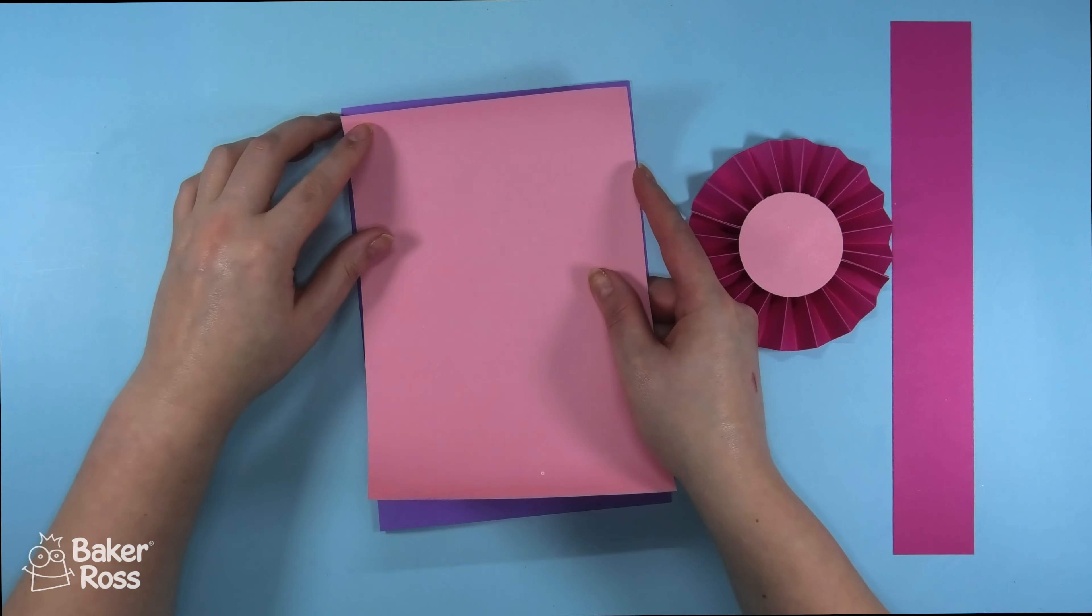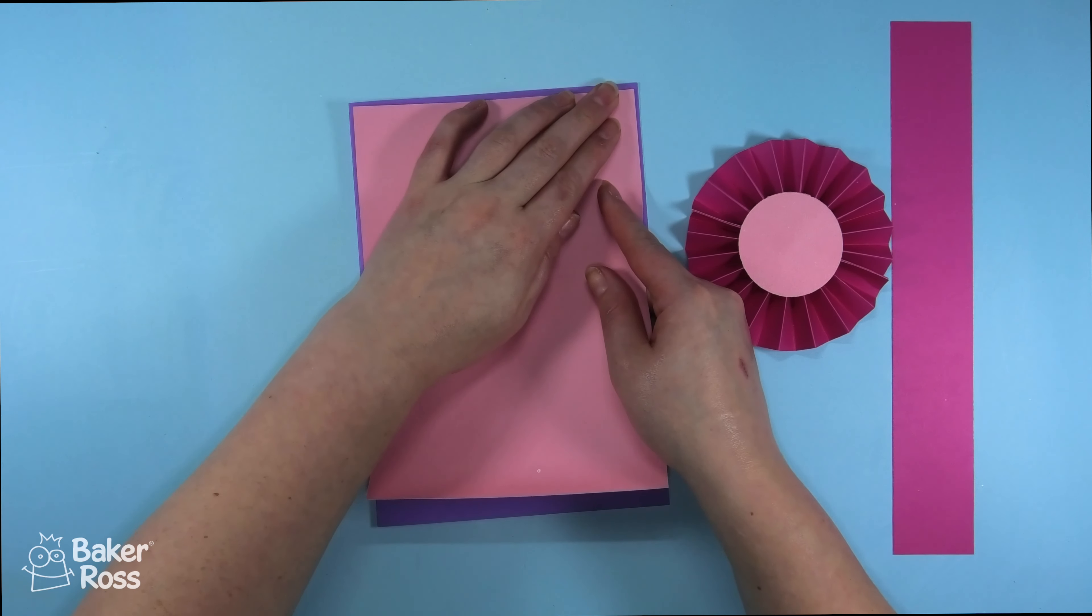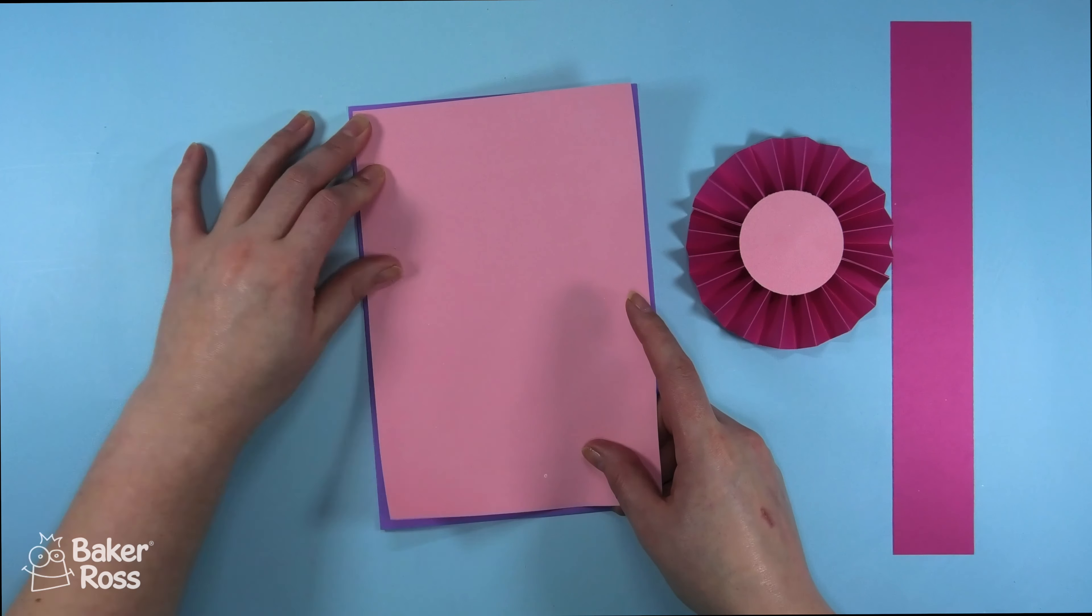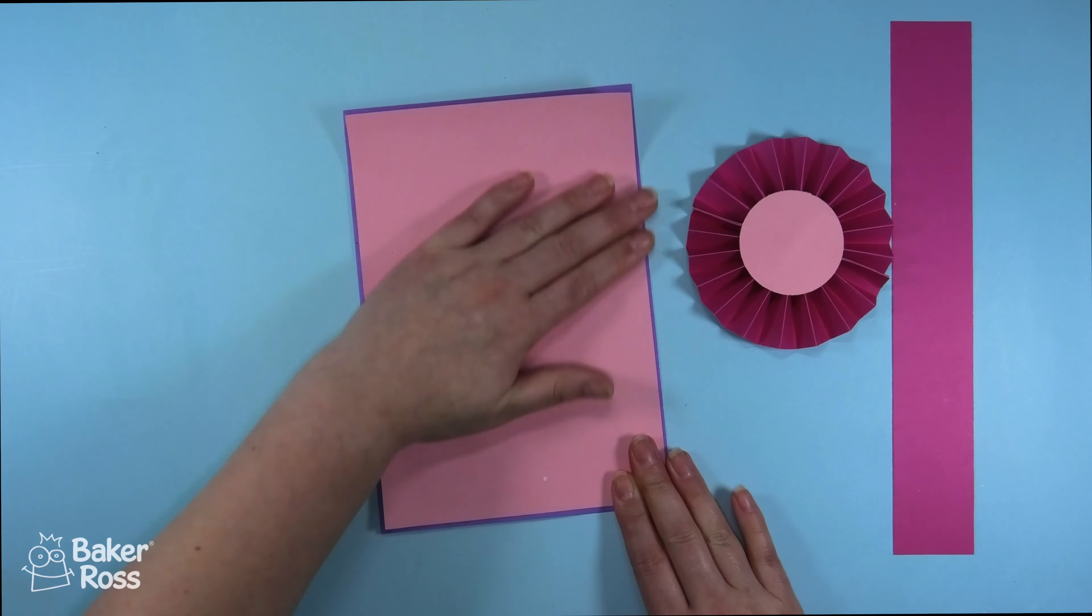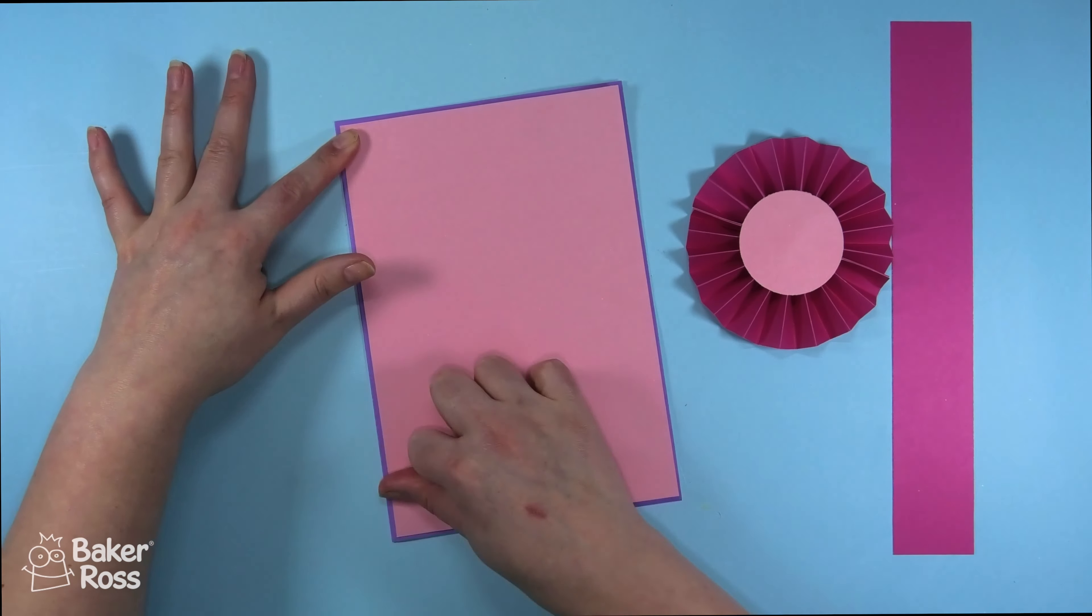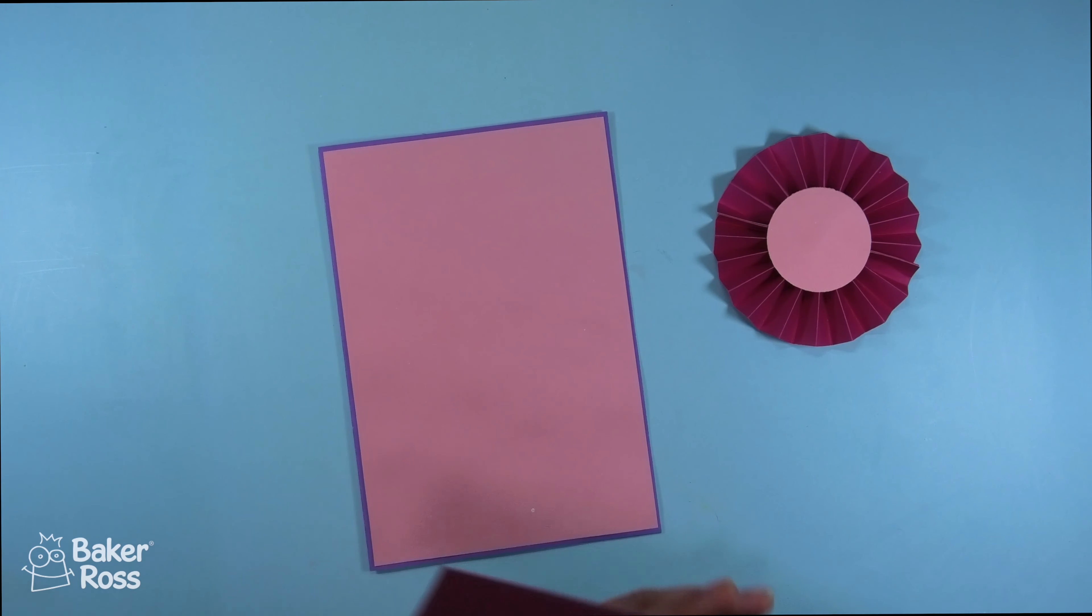I used a ruler to measure that out and then just trimmed a piece of paper to be ever so slightly smaller so it would act as a layer on top of the card base and I'm using a glue stick to stick that down in place.